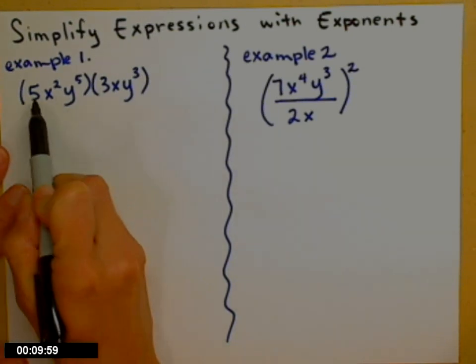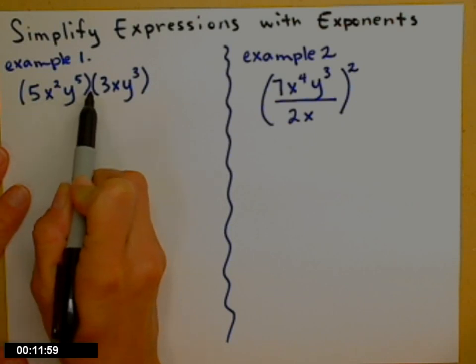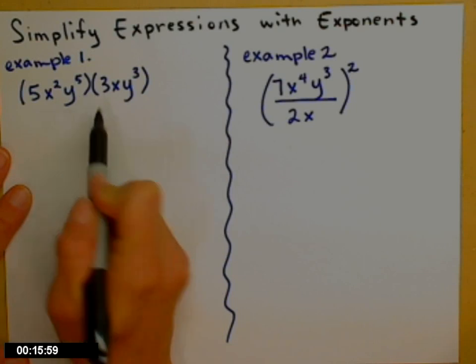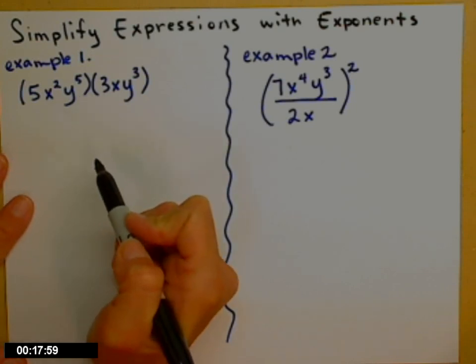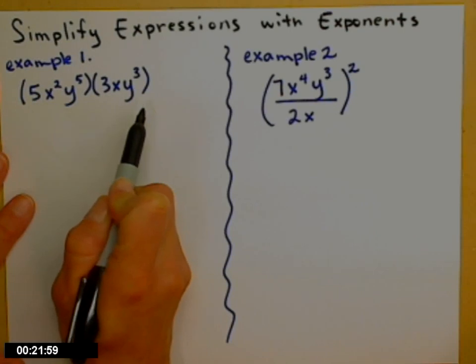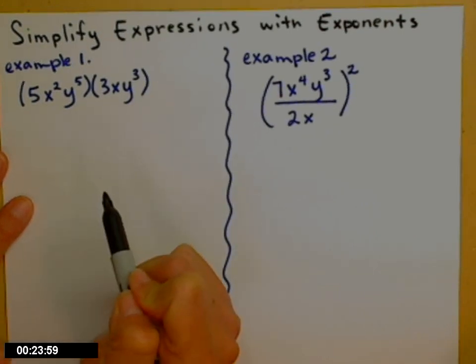The first one I have 5x squared y to the fifth times 3xy cubed. So there's nothing in between those parentheses. That's how I know it's times. I don't have any other pluses and minuses in here, which is really great. That means I can just drop those parentheses.